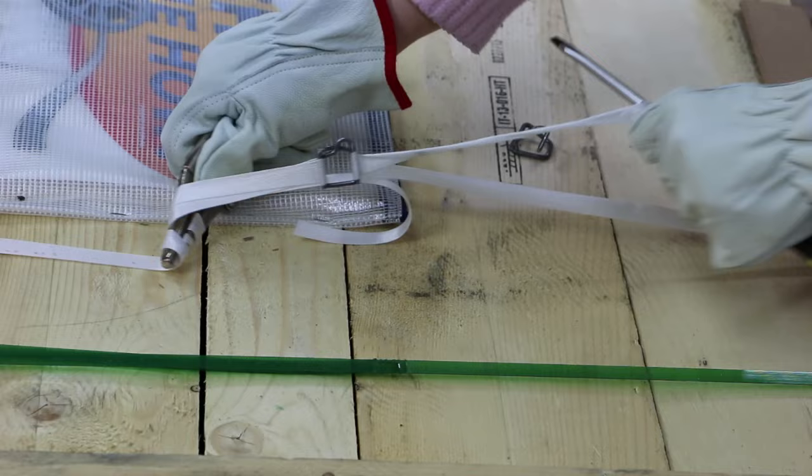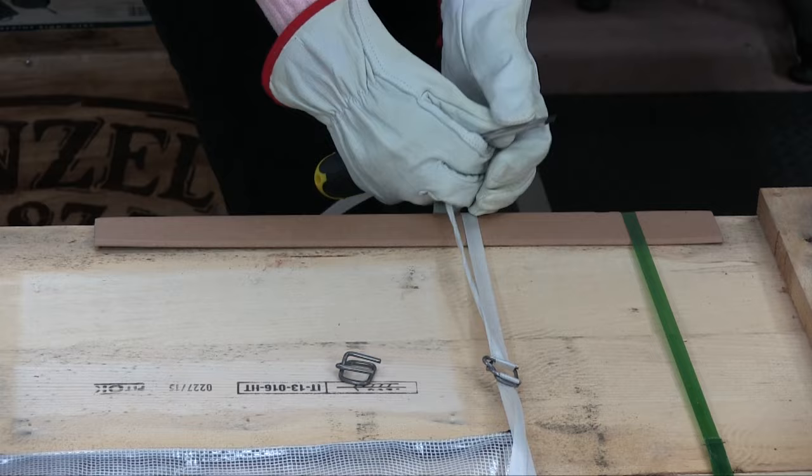Pull both top ends of strapping in opposite direction to apply tension. You can manually tighten, use tensioners, or like you see here you can use a screwdriver that seems to work well.